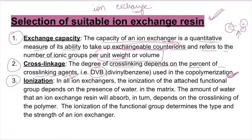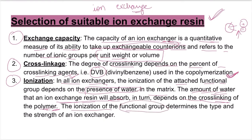The third is ionization. In all ion exchangers, the ionization of the attached functional group depends on the presence of water in the matrix. The amount of water that an ion exchange resin will absorb depends on the cross-linking of the polymer. The ionization of the functional groups — because there are ions present in the functional groups — determines the type and strength of the ion exchanger.